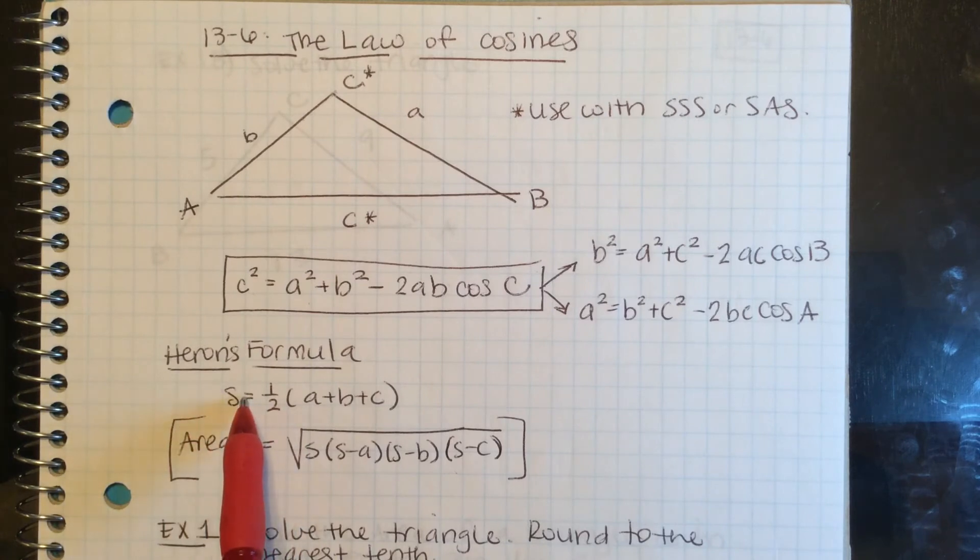Given that S is equal to half of the perimeter of the triangle, the area of the triangle is square root of S times S minus A times S minus B times S minus C.